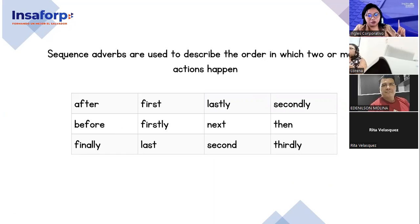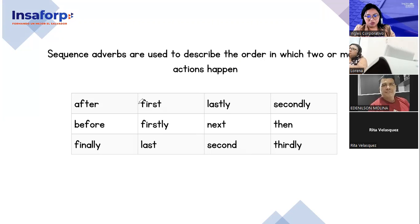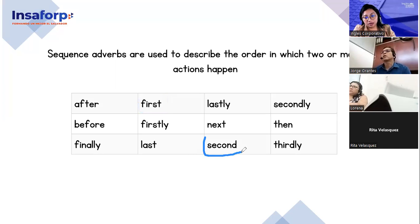Okay, we can have: after, before, finally, first, firstly, last, lastly, next, second, secondly, then, thirdly. Si se fijan, es bien común usar los — ¿cómo les llamamos a estos? A estos números: first, second — ¿se acuerdan cómo se llaman? ¿Qué tipo de números son? Primero, segundo, tercero — ordinal numbers. Así que pueden usar ordinal numbers, no hay problema.